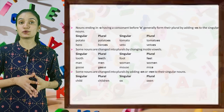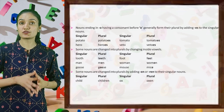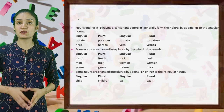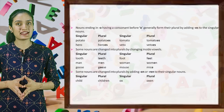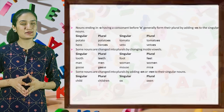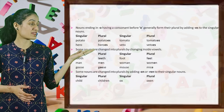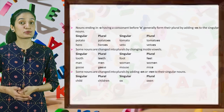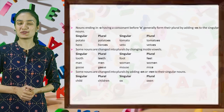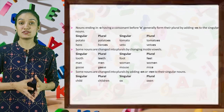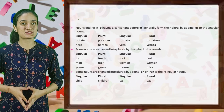Nouns ending in O having a consonant before O generally form their plural by adding ES to the singular: potato → potatoes, tomato → tomatoes, hero → heroes, veto → vetoes.